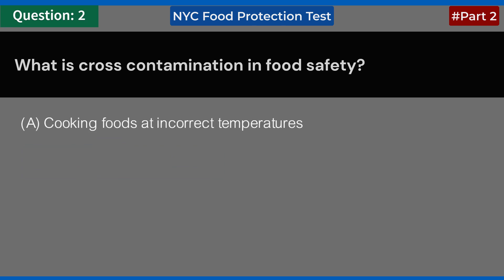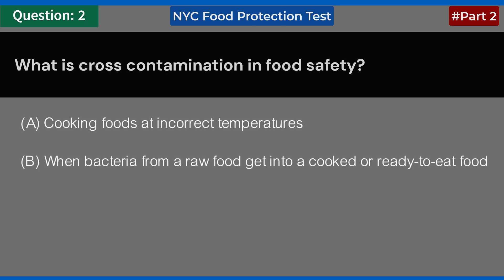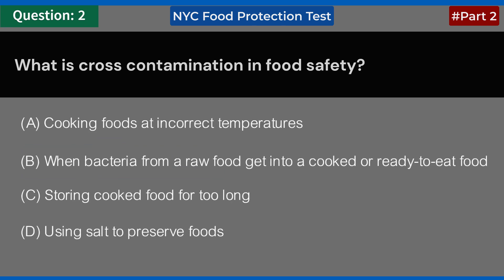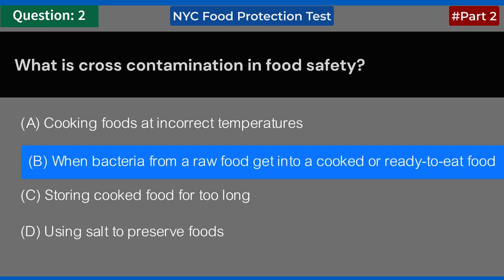What is cross-contamination in food safety? A. Cooking foods at incorrect temperatures. B. When bacteria from a raw food get into a cooked or ready-to-eat food. C. Storing cooked food for too long. D. Using salt to preserve foods. Answer: B. When bacteria from a raw food get into a cooked or ready-to-eat food.